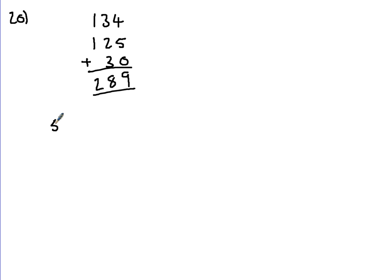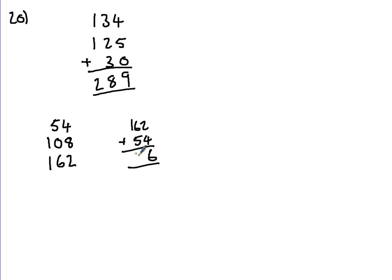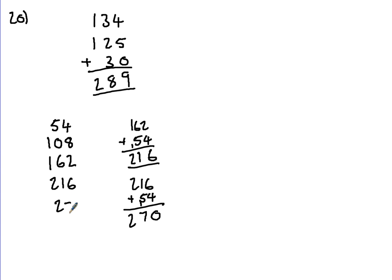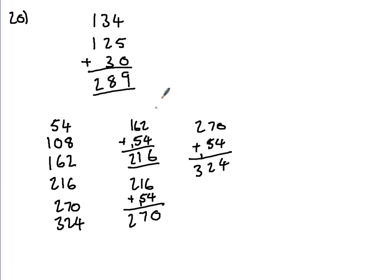Now each coach holds 54 people. So what I would do is go up in 54s: 54, 108, 162 — and another 54 gives 216, that's 4 coaches, still not enough. 216 add 54 gives 270, that's 5 coaches, still not enough. 270 add 54: 0 and 4 is 4, 7 and 5 is 12, 2 and 1 carry is 3 — that's 324. We've got enough. So we're going to need 6 coaches.